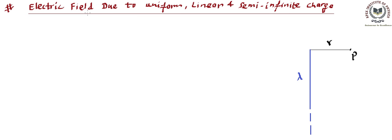After learning the electric field formula for the infinite case of uniform linear charge distribution, let's now consider the semi-infinite charge distribution. We call it semi-infinite if the linear charge runs from one end which is finite to another end which is at an infinite location. If charge is linearly distributed such that one end approaches infinity and another is at a finite location, we need to find the field at point P, at distance r from the finite end.